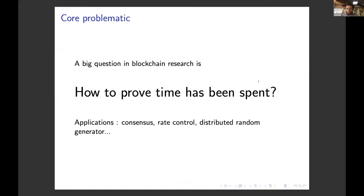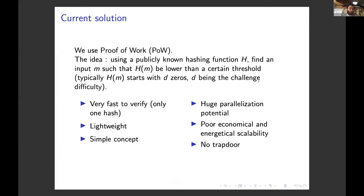Applications include consensus, rate control, display, and distributed random generators, but not only blockchain. It's also a question about security and anti-spamming. One of the most used current solutions is what we call Proof of Work. The idea is that using a publicly known hashing function, we have to find an input m such that H(m) is lower than a certain threshold which determines the challenge.